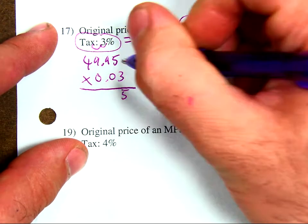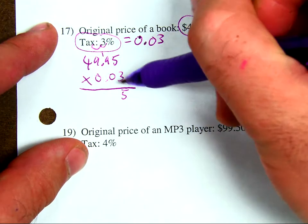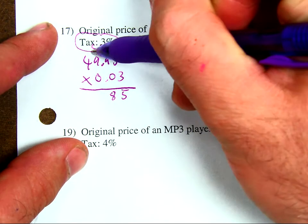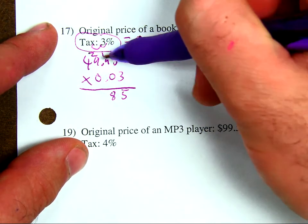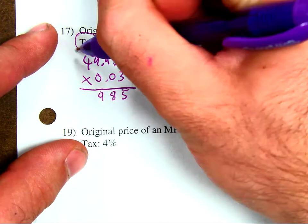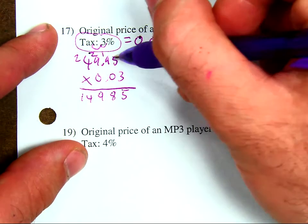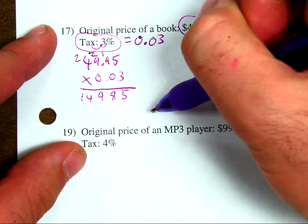3 times 9 is 27, plus 2 is 29. 3 times 4 is 12, plus 2 is 14. I know 0 times everything is going to be 0, so I can just leave it as this.